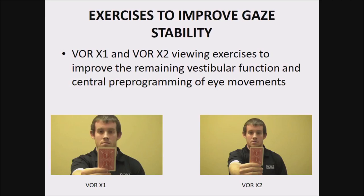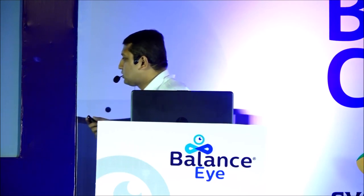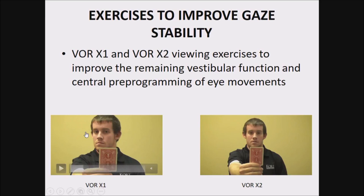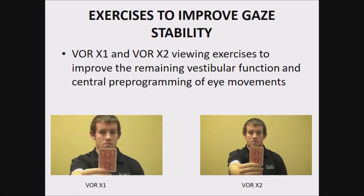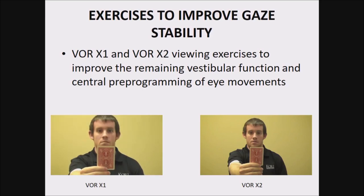These exercises can be taught to patients and mainly performed in their home setup. The first exercises stabilize the gaze. They are abbreviated as VOR x1 and VOR x2 — vestibular ocular reflex exercises one and two. This is basically to stabilize the gaze: the patient is asked to look at a card or visiting card, concentrate on it, and move the head in either direction — horizontal and vertical — while keeping their eyes fixed on the card.